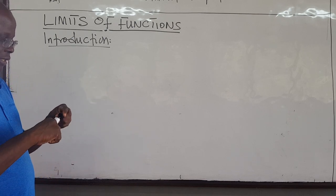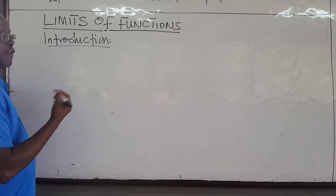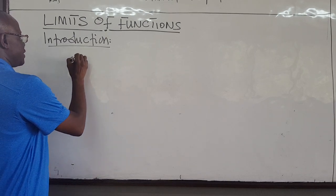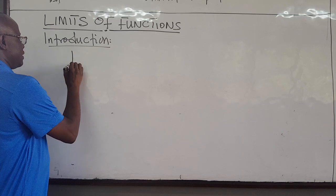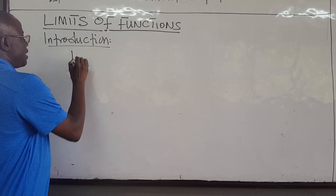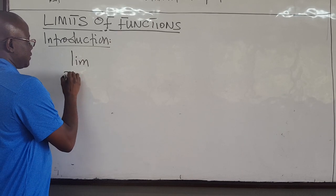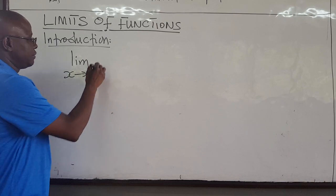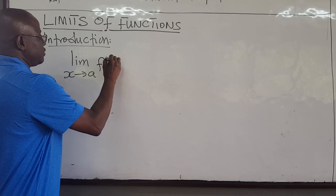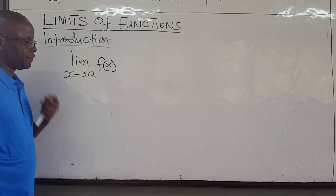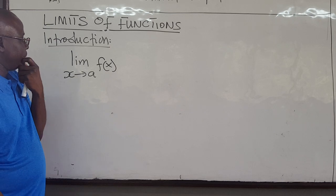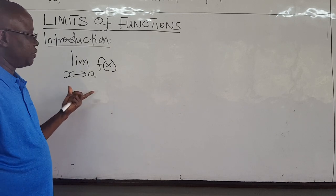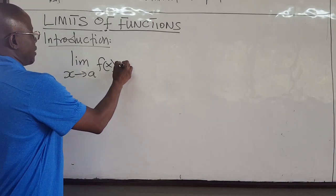The limit of a function as x approaches a is written as the limit as x approaches a, some number, of a function f of x. So if this limit exists, we'll call this some L.